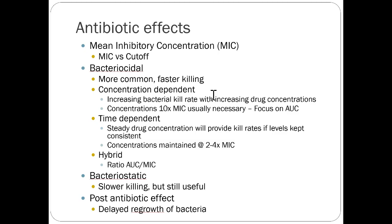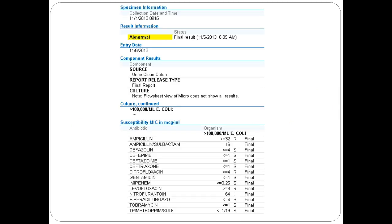Bacteriostatic agents simply prevent bacterial regrowth — they are effective, just slower. Post-antibiotic effect mostly occurs with concentration-dependent killers: they reach very high levels, kill a large amount of bacteria in one shot, and the remaining cells take a while to regrow. This means the antibiotic can be fully eliminated from the body before bacterial regrowth resumes — so you don't need sustained steady-state concentration for these drugs.